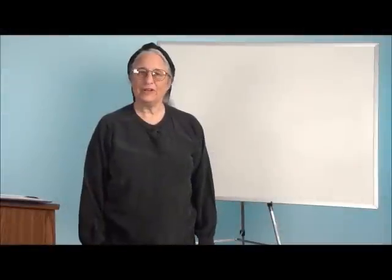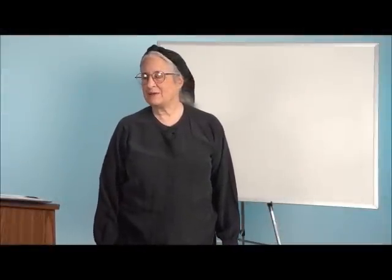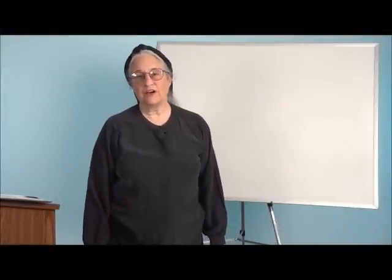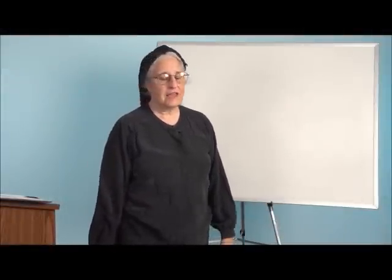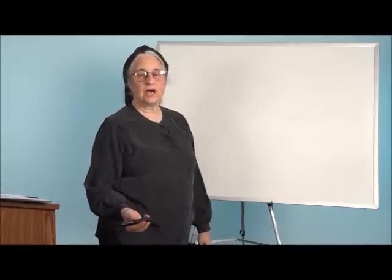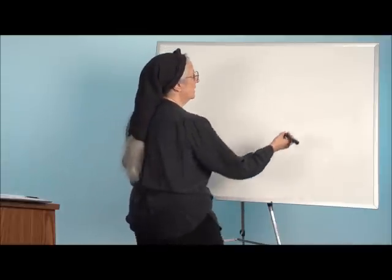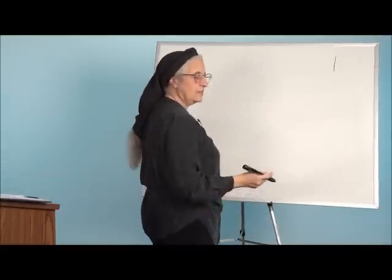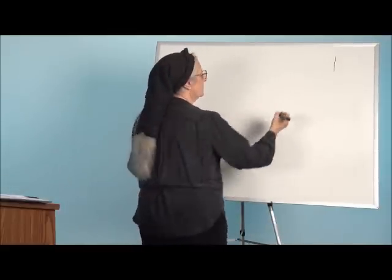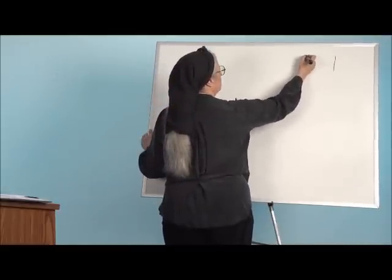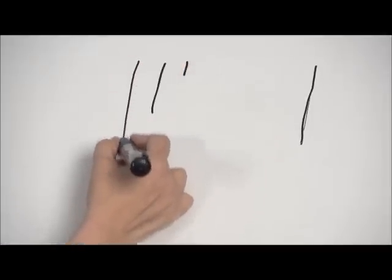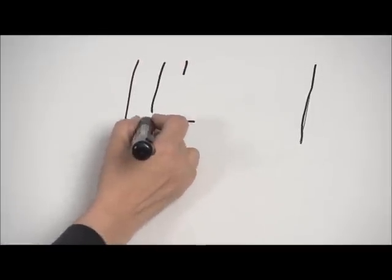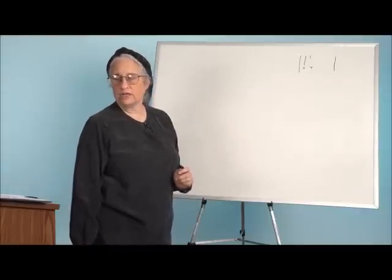We have three new letters to learn today. The first is the final Nun — Nun sofit — and similar to the block writing, it's just going to be a straight line coming straight down. Let's go back and write that word for Greece: Yavon — Yud, Vav, Nun. That's what they look like in the handwriting — very similar to the block.